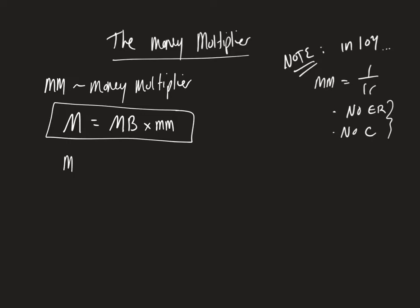We can rearrange this. We have the money multiplier is going to be equal to M over MB. And we know from our current lesson is that the overall money supply is the currency plus deposits. That's very similar to exactly what that M1 is that we talked about during this lesson.